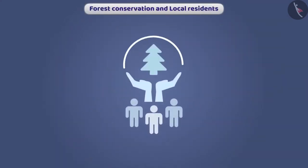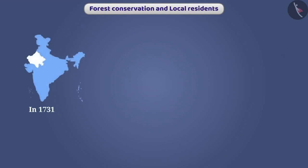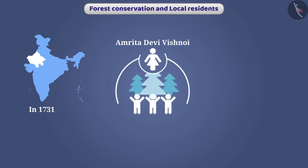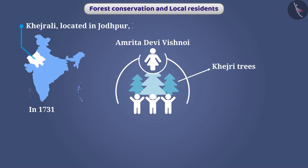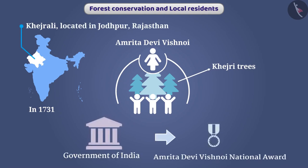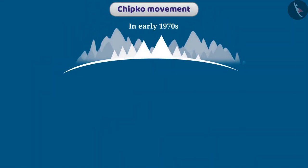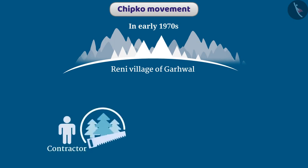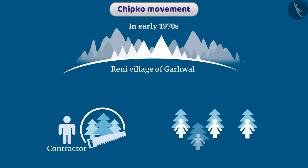Local residents are trying to conserve forests as per their tradition. In 1731, Amrita Devi Vishnoi along with 363 people from the village sacrificed themselves to save Khejri trees in the village of Khejrali located in Jodhpur, Rajasthan. The Government of India has arranged the Amrita Devi Vishnoi National Award for conservation of animals. In the early 1970s, in a village of Garhwal, women hugged trees to prevent a contractor from cutting them — the contractor eventually had to withdraw.